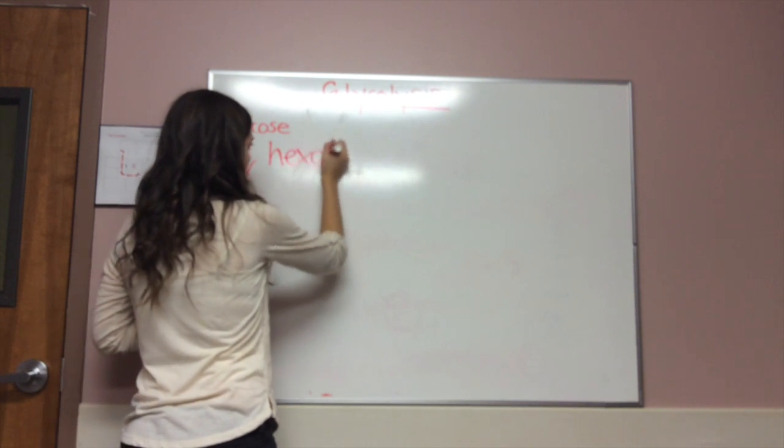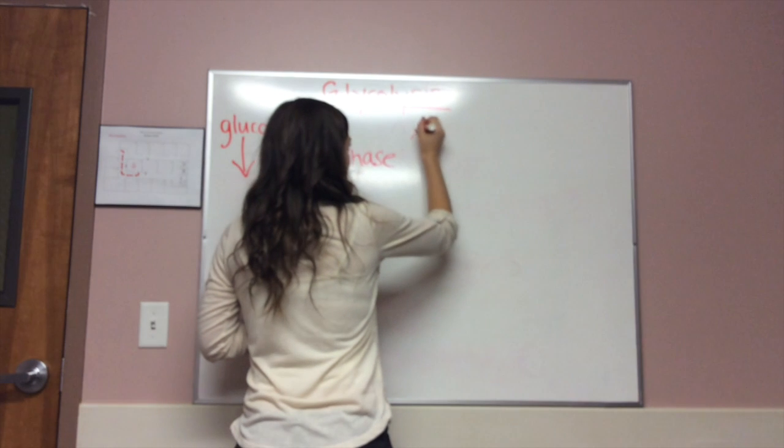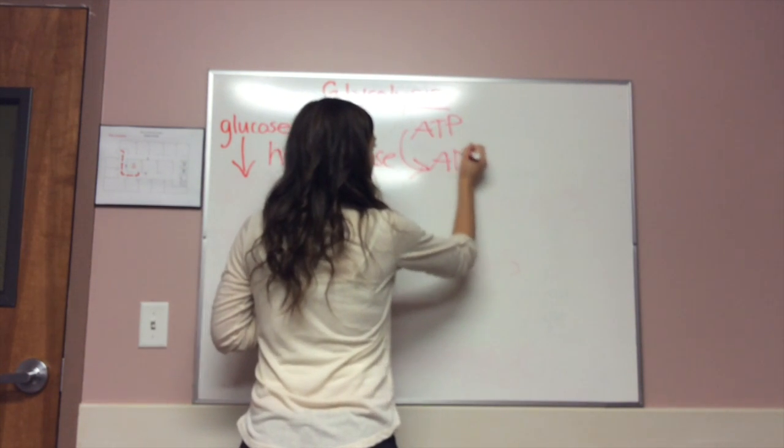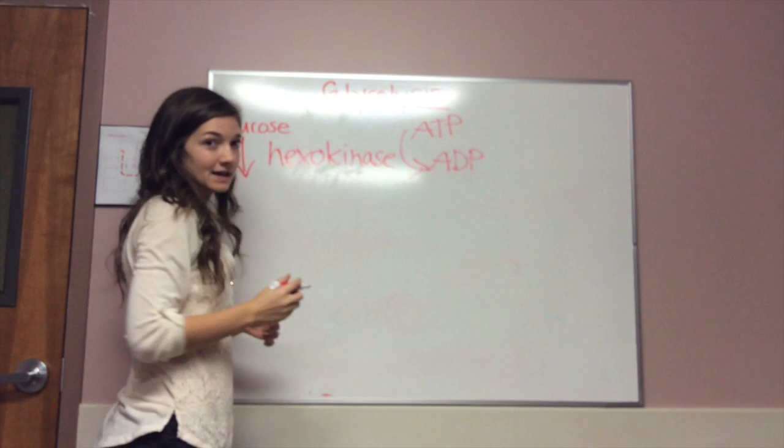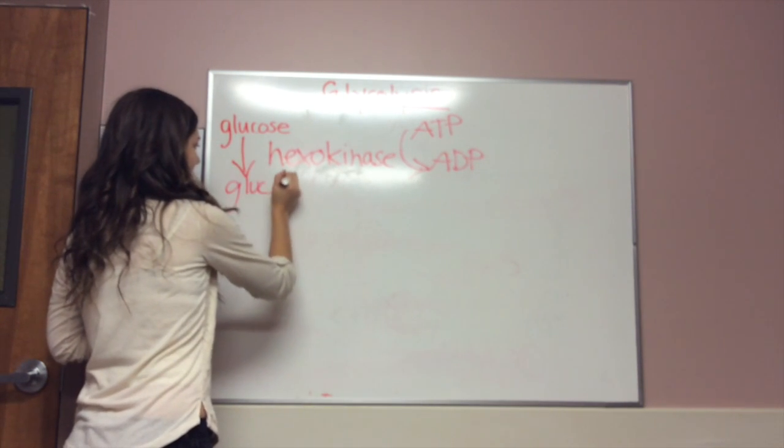Hexokinase phosphorylates glucose by taking a phosphate group off of ATP and adding it to the 6 carbon of glucose. This gives us glucose 6-phosphate.